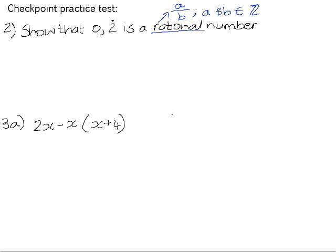So if we are asked to show that 0.2 recurring is rational, what we're basically being asked to do is to rewrite it as a fraction. Because if we can write it as a fraction, then we can show that it's a rational number.